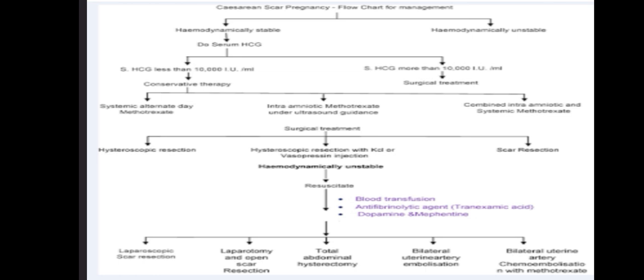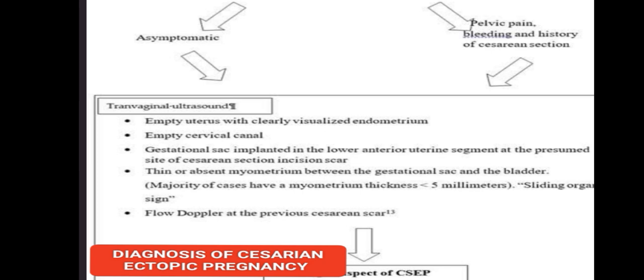Regarding management, you have to assess whether the patient is hemodynamically stable or unstable. If she is stable, you have to monitor beta HCG levels. If these are not rising at 48-hour intervals and the pregnancy appears to be failing, then conservative management can be chosen.